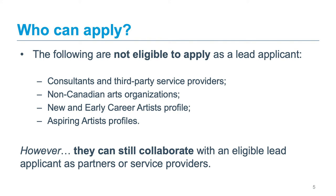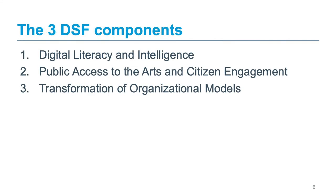Now let's look more deeply at the three components of the DSF. The three components are: digital literacy and intelligence, public access to the arts and citizen engagement, and transformation of organizational models. Each one of these components corresponds with the main goals of the DSF. The first component, digital literacy and intelligence, is about helping you learn about digital issues and challenges, which aligns with the goal of building strategic digital knowledge and capacity.